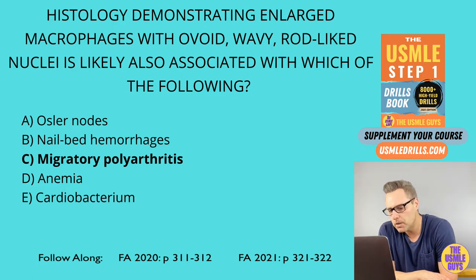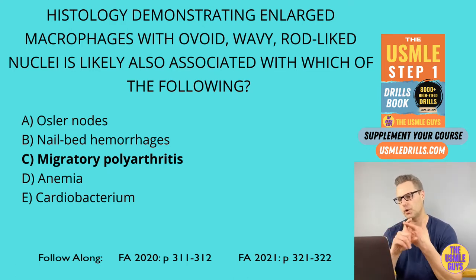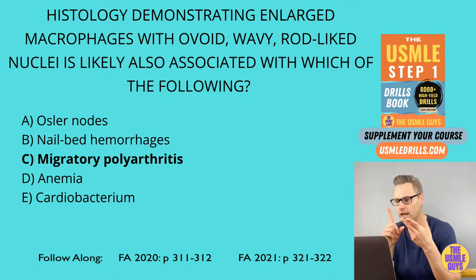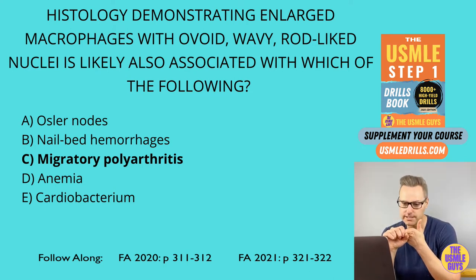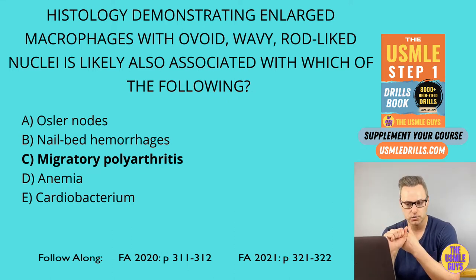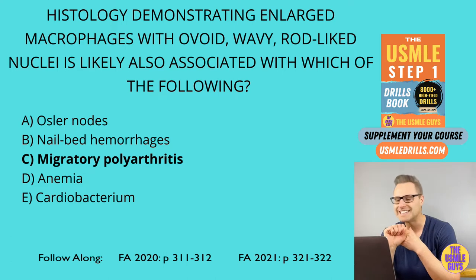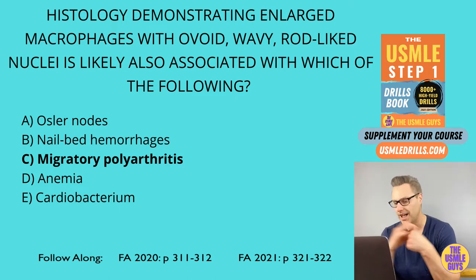In this condition, we have an M protein that cross-reacts with self-antigens. You can remember the major physical findings with the Jones criteria. This includes joint pain in the form of migratory polyarthritis, heart disease — specifically rheumatic heart disease, which is a late sequela — subcutaneous skin nodules, erythema marginatum, and Sydenham's chorea. How can we treat or prophylax against this?